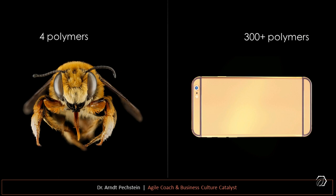Then we have an energy carrier — glycogen — and information carriers: DNA and RNA. These four polymer groups pretty much make up the entire complexity of this organism. On the right-hand side, looking at the products we build — the human-made world — they are made of a much larger array of polymers. The problem is that they are produced under questionable conditions with many toxic byproducts in the synthesis process, and these products are not built for disassembling. Whereas in the bee example all materials go back into the material cycle, most of our products currently cannot be reused.